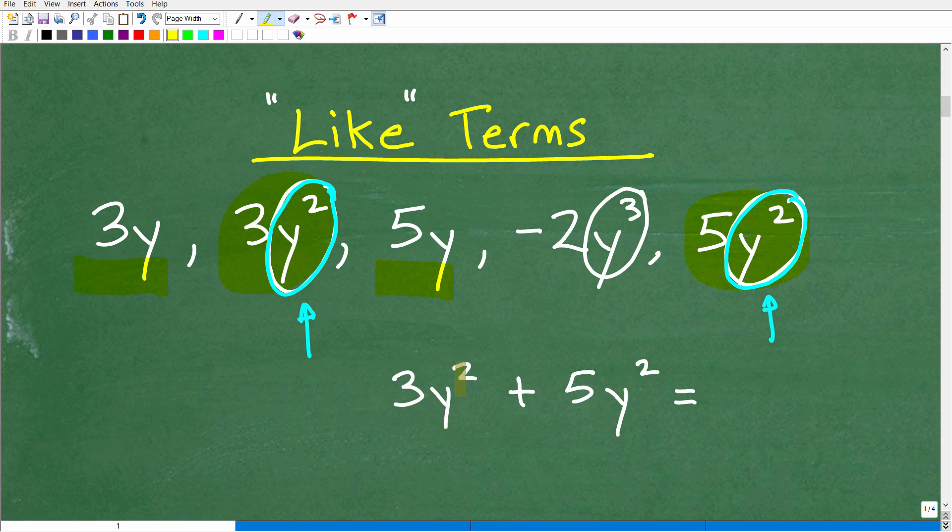So what does that mean? Well, we can add them up. If I have 3y squares over here and I have 5y squares over here, how many total y squares? Well, all you need to do is add the coefficients. So in this case, we would have 8y squared.